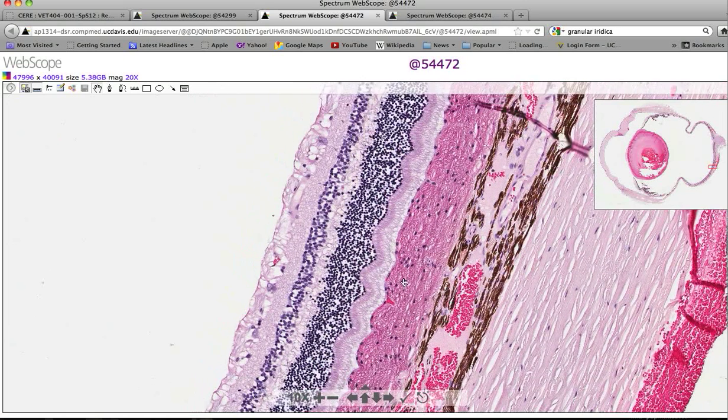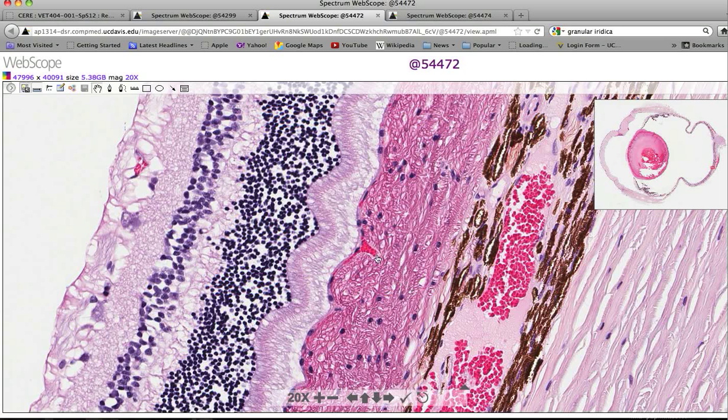We can kind of make out—zoom up one more—we can see this blood vessel heading up to the very inner surface of the choroid and making this little capillary layer. This is the chorocapillaris. This is the vascular supply that's just outward of the RPE here, retinal pigment epithelium.